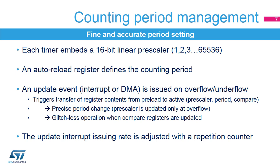The auto-reload register defines the counting period. In down-counting mode, the counter is automatically reloaded with the period value when it underflows. In up-counting mode, the counter rolls over and is reset when it exceeds the auto-reload value. An update event is issued when the counter underflows or overflows and a new period starts. It triggers an interrupt or DMA request used for adjusting timer parameters synchronously with its period, which is useful for real-time control.